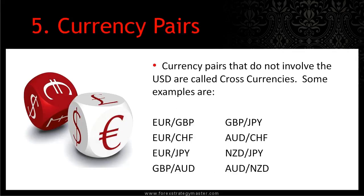Currency pairs that do not involve the US dollar are called cross currencies. Some examples of cross-currency pairs are the Euro/Pound, the Euro/Swiss franc, the Euro/Japanese yen, the Pound/Australian dollar, the Pound/Japanese yen, the Australian dollar/Swiss franc, the New Zealand dollar/Japanese yen, and the Australian dollar/New Zealand dollar. We can pair different currencies up with different currencies to make an assortment, and if they do not contain the US dollar, they are called cross-currencies.